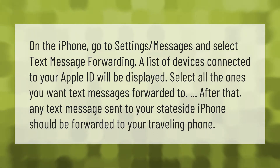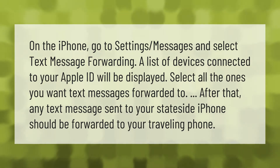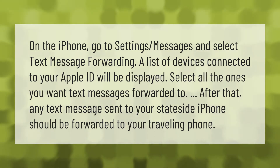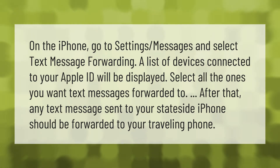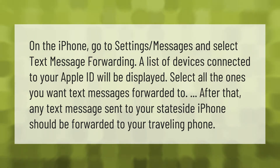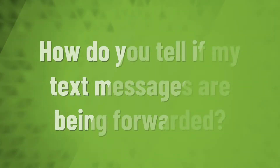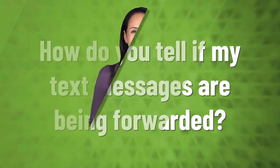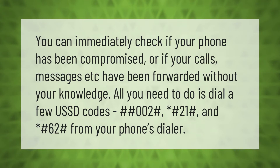On the iPhone, go to Settings > Messages and select Text Message Forwarding. A list of devices connected to your Apple ID will be displayed. Select all the ones you want text messages forwarded to. After that, any text message sent to your stateside iPhone should be forwarded to your traveling phone.